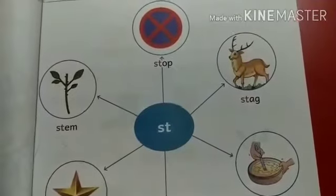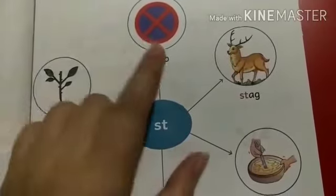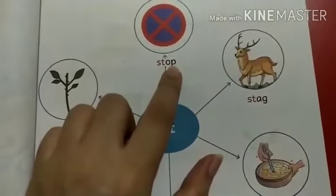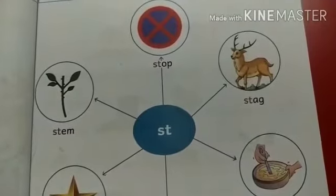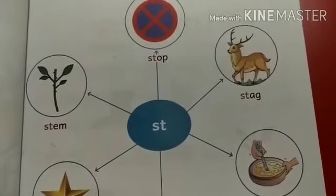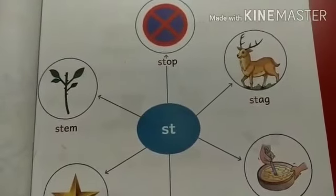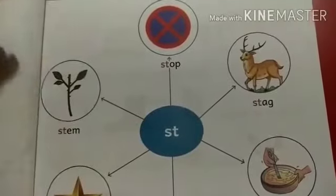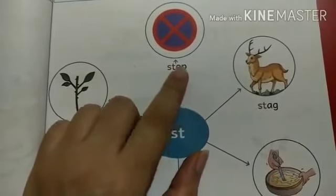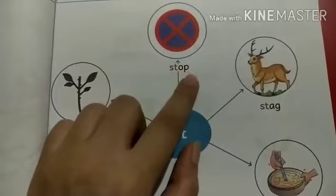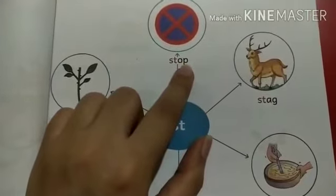Dear parents, as it is a new concept for the kids, so at the initial stage, in the starting, you can write the blends and read the words. Like: st, op — stop. This way, kids will set the words in their minds. And they will learn it quickly. Once a child recognizes the words and they settle down in their mind, then after 3-4 days, you can start reading the words directly like 'stop.' But in the starting, you will join: st, op — stop.